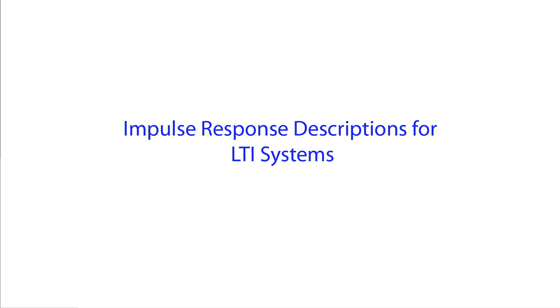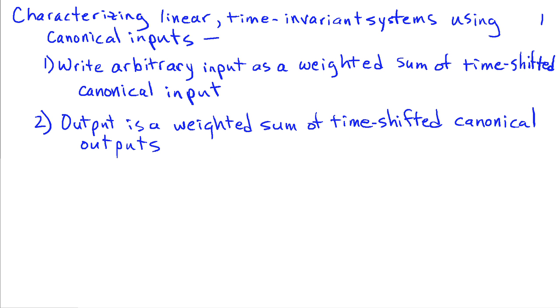The input-output characteristics of a linear time invariant system can also be described in terms of the impulse response. The basic idea behind use of the impulse response, as well as frequency response and system or transfer function, is to characterize the output of a linear time invariant system using a canonical form of input, or a special input. If we can write an arbitrary input as a weighted sum of time-shifted versions of these special or canonical inputs, then, because of linearity and time invariance, the output is the exact same weighted sum of time-shifted outputs corresponding to the canonical input.